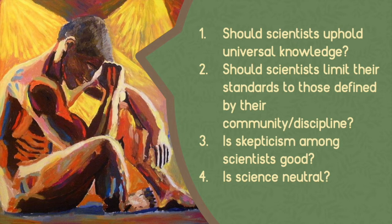The next and final question: is science neutral? The answer is a big no. We've had so many examples of how big companies try to skew findings and fund research that supports their products, even if it's harmful to society. Science is very far from neutral — science is heavily politicized, heavily social, and heavily cultural. Science is not completely objective; it is definitely biased toward where the power structures are located.